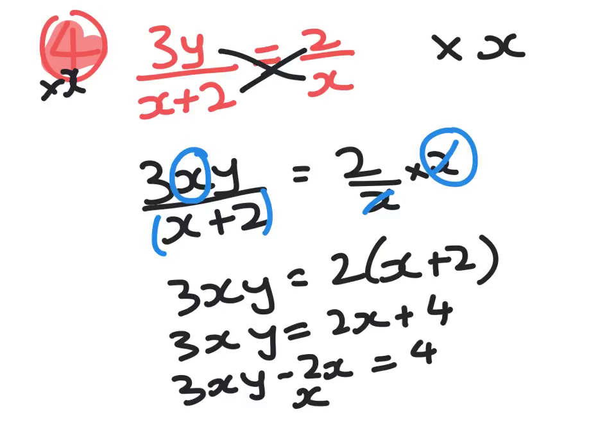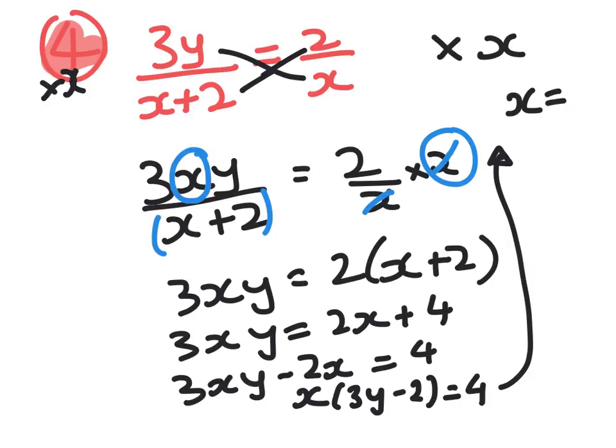So x times 3y minus 2 equals 4. Now I'm going to very messily try and squeeze my answer up here. And it ends up being x is equal to 4 over 3y minus 2. Now hopefully there's no maths teachers watching to tell me that my working is shocking, right? Please don't do it like that in your book.